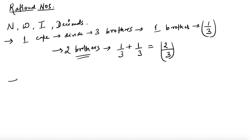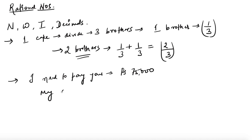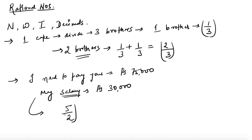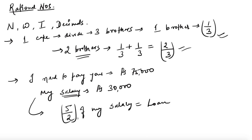Let us take another situation. Say I need to pay you a sum of 75,000 rupees — I took a loan from you and need to pay you back. Considering that my salary is 30,000 rupees, in terms of my salary I need to pay you five-by-two of my salary, which is equivalent to my loan. I'm giving such examples to show you different types of fractions: here you can see a proper fraction where the numerator is less than the denominator, and here a fraction where the numerator is greater than the denominator.